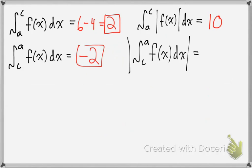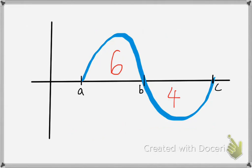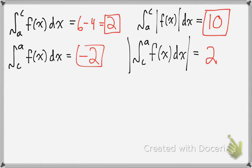So we would get 10. Now for this problem, you're taking the absolute value of the entire answer. The limits of integration are flipped, so it's c to a instead of a to c. C to a would be going in this direction, and as we calculated before, you get negative 2. But since you take the absolute value of that, you would get positive 2. So these are the different types of questions you may see on the AP test — make sure you know the difference between all of them.